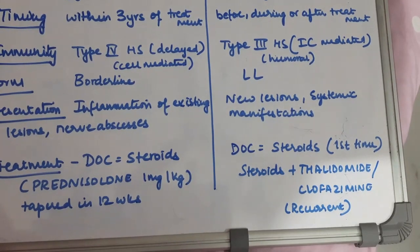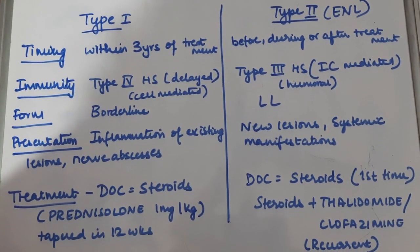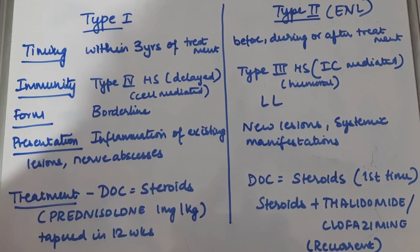The nerve abscesses in type 1 lepra reactions are treated by incision and drainage of the abscess.